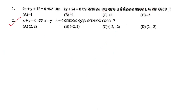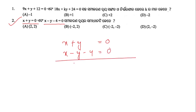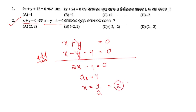Question number 2: x + y = 0 and x - y - 4 = 0. To find the solution of these two equations, we add them. The +y and -y cancel out, giving 2x - 4 = 0, so 2x = 4, that is x = 4/2 = 2. Substituting x = 2 to find y gives y = -2. So the solution is (2, -2), and option D is the right answer.